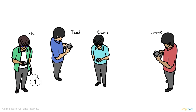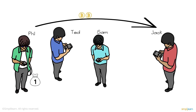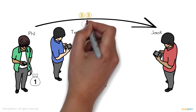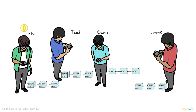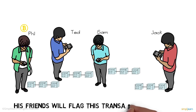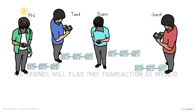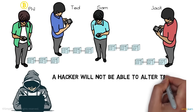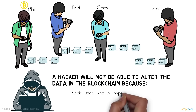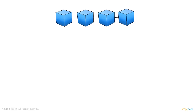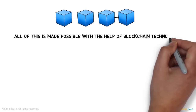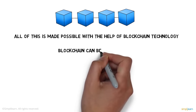If Phil has only one bitcoin left and tries to send two more to Jack, the transaction will not go through. All his friends have copies of the ledger and can clearly see Phil has only one bitcoin, so they will flag the transaction as invalid. A hacker cannot alter the data in the blockchain because each user has a copy of the ledger and the data within the blocks is encrypted by complex algorithms.